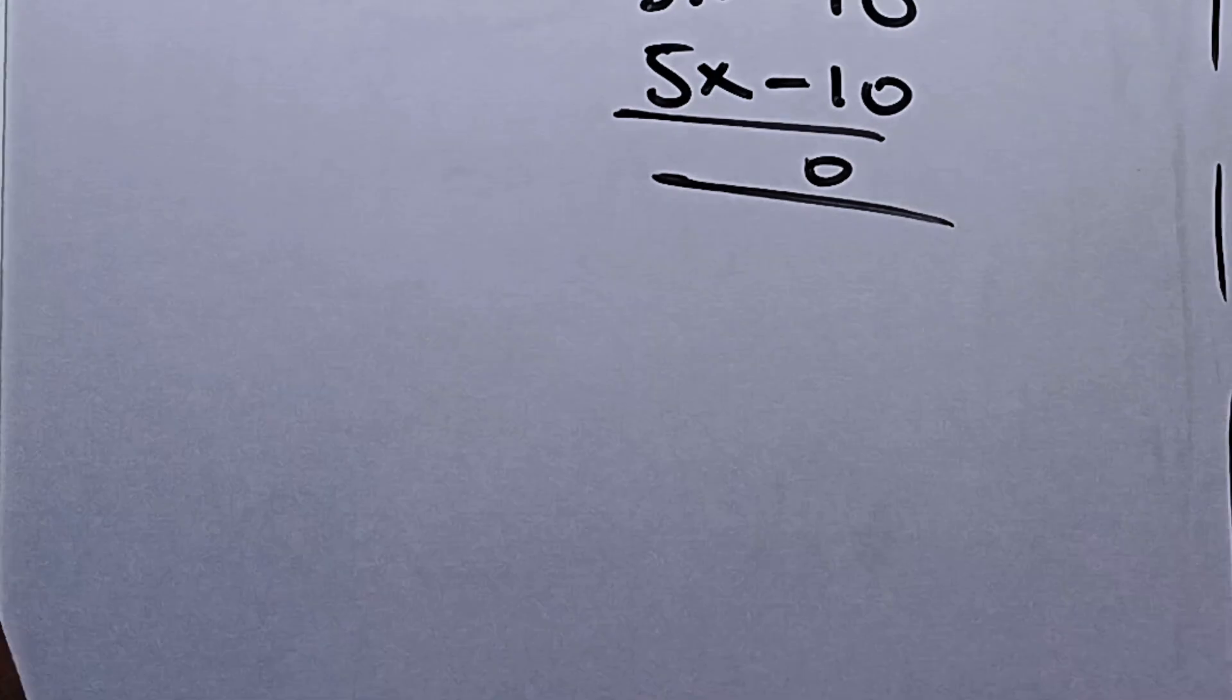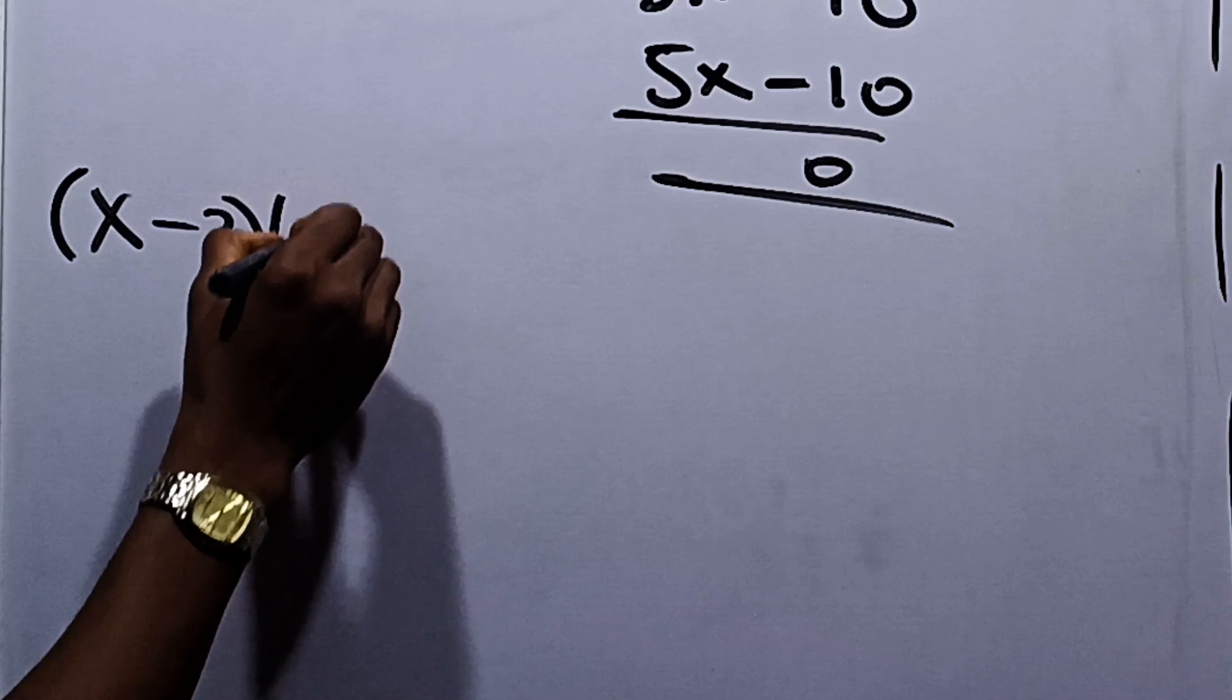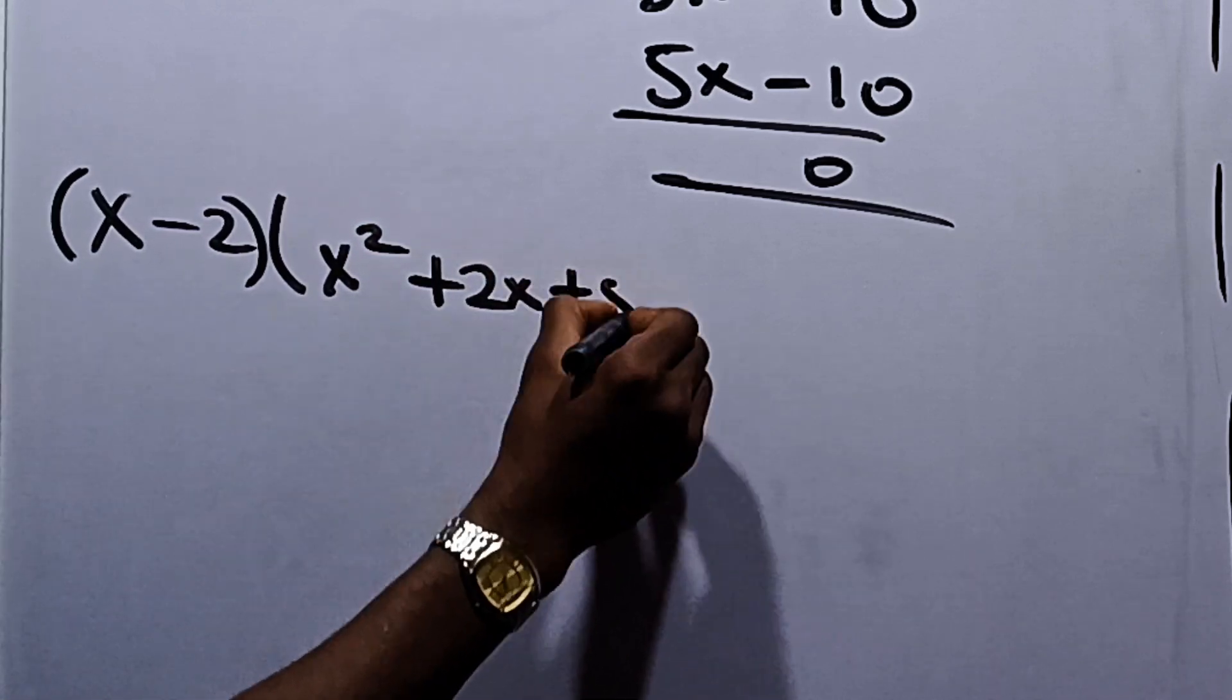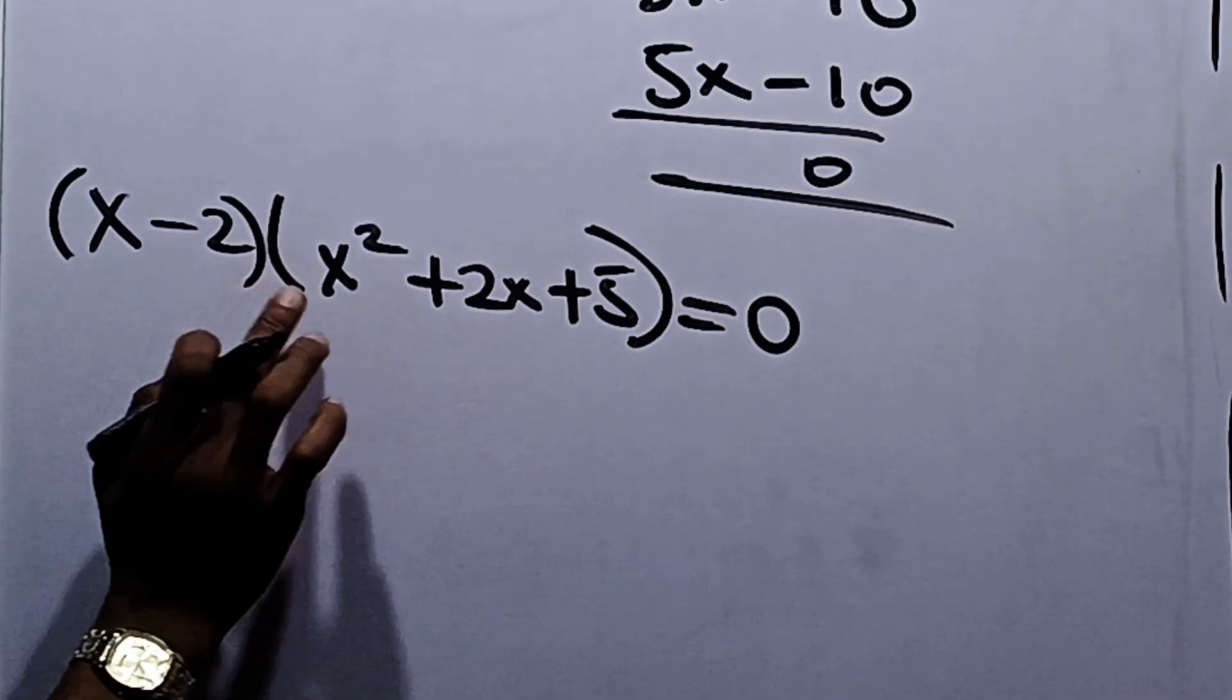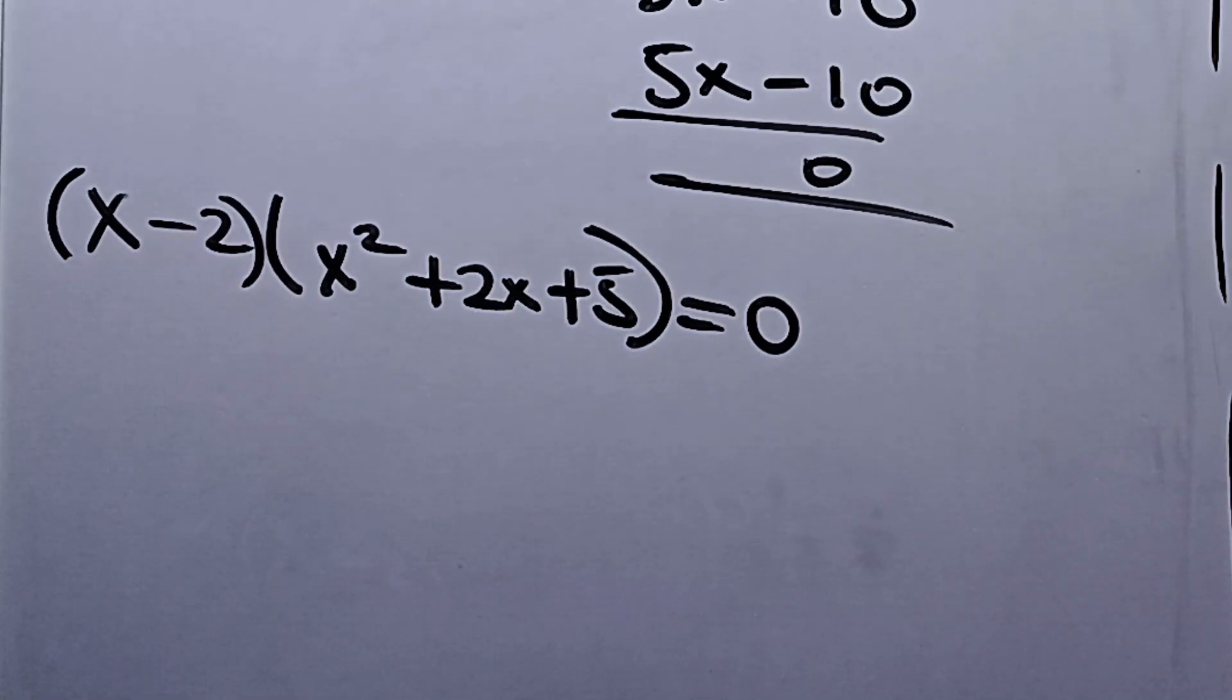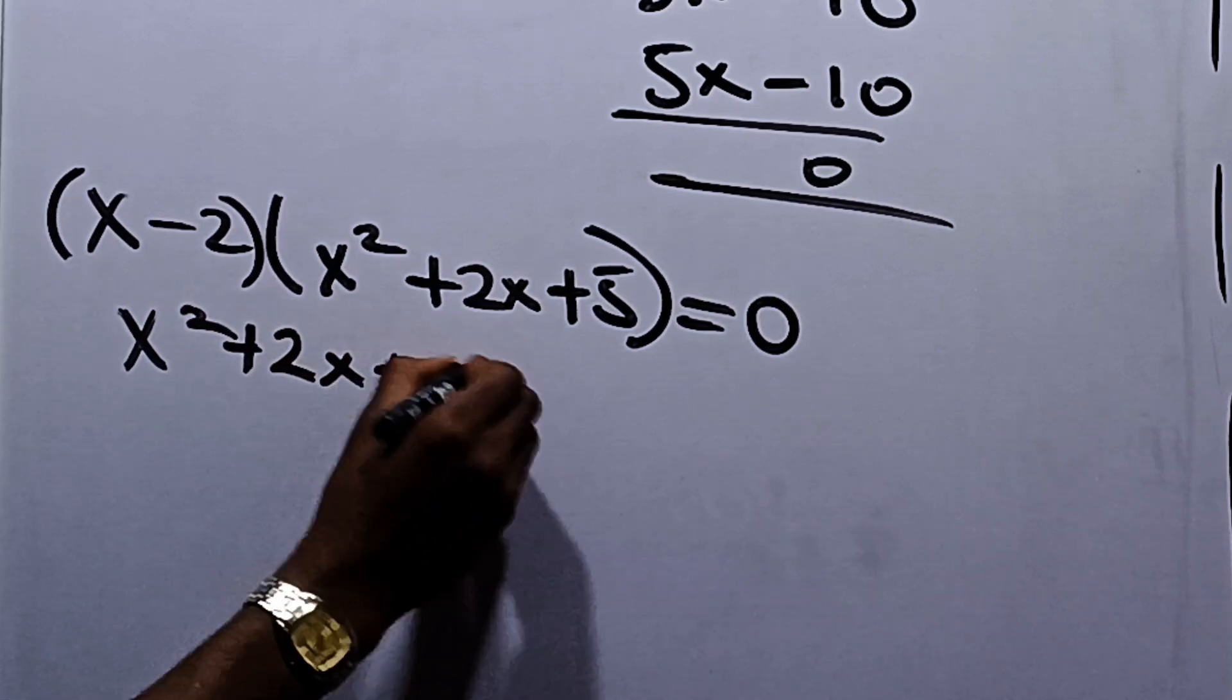So this is the division of this polynomial. Now from here, we have that the two factors for this equation are x minus 2 multiplied by x squared plus 2x plus 5, and this equation equals 0. If this equals 0, we already have that x equals 2.